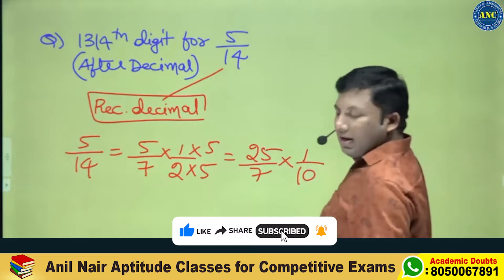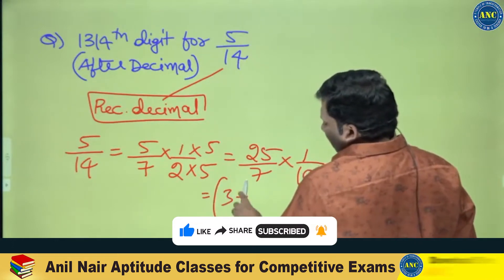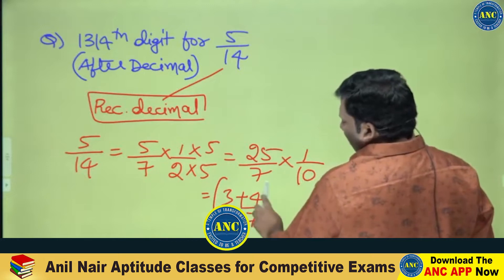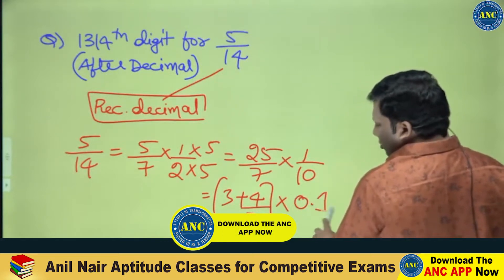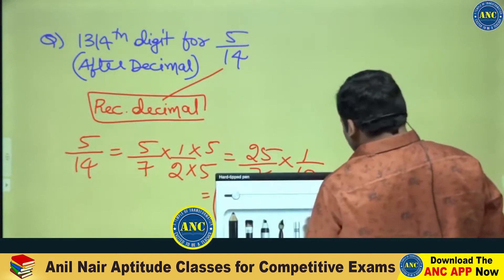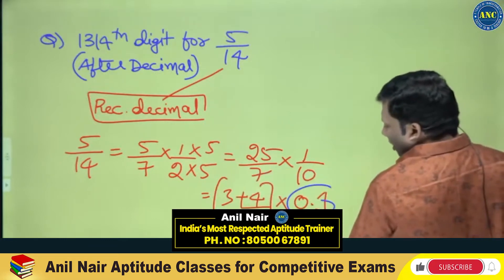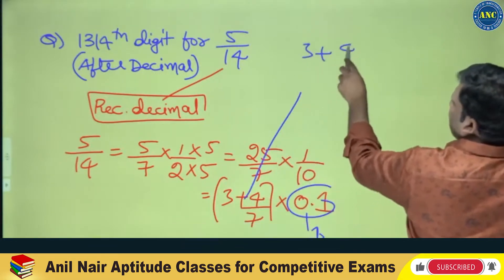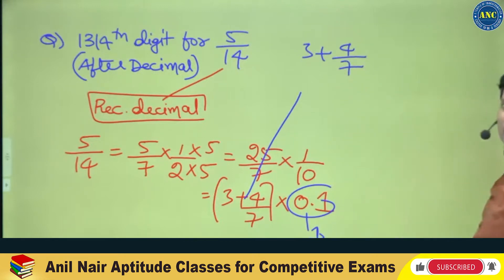Are you all with me? 25 is 3 plus 7 — that is, 3 times 7 is 21, so 25 by 7 is 3 plus 4 by 7. And 1 by 10 is 0.1. So after that one digit we get 3 plus 4 by 7.